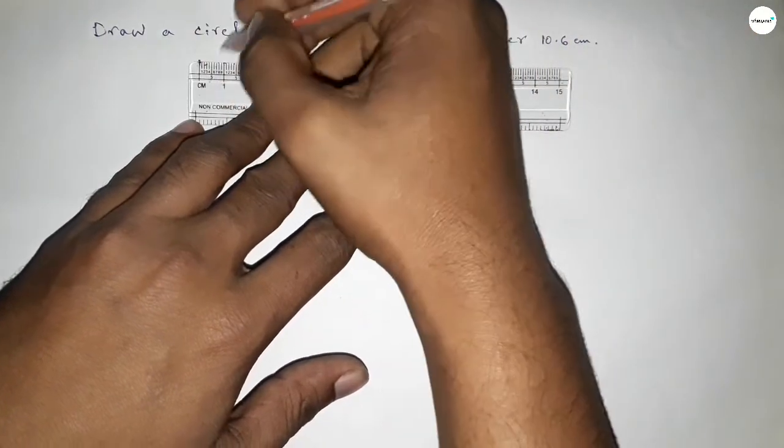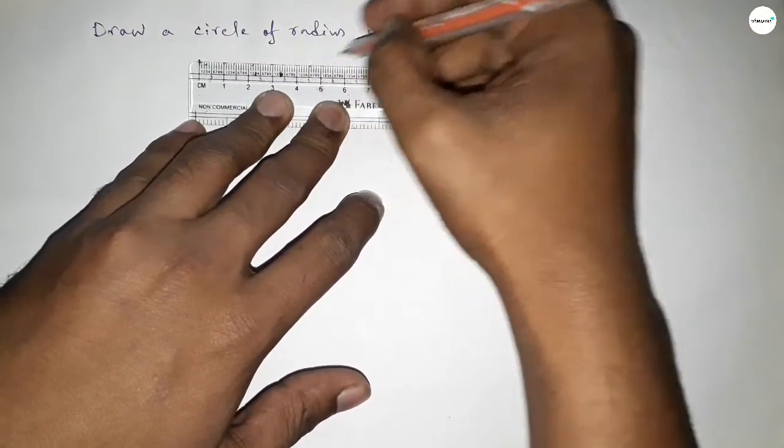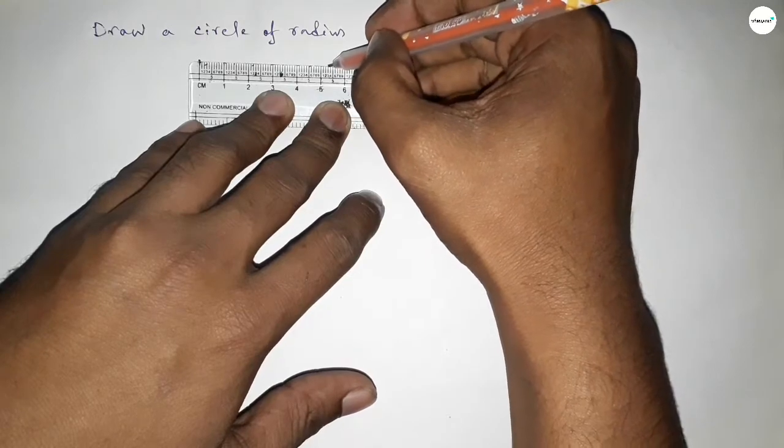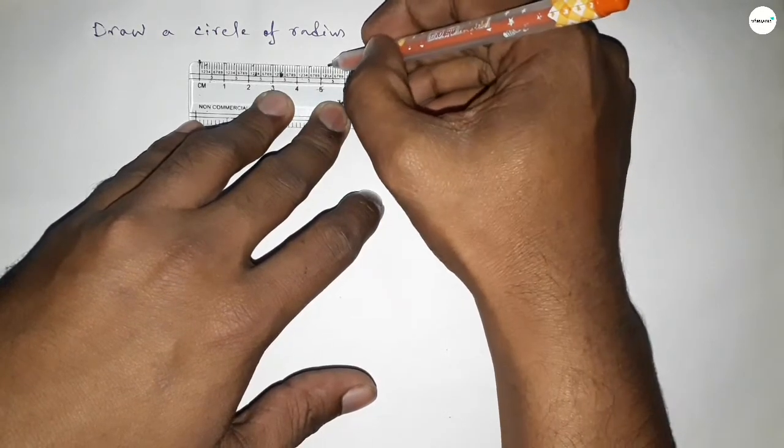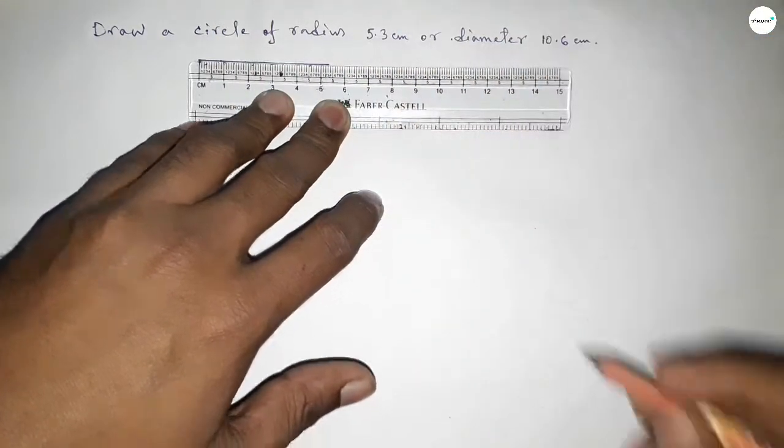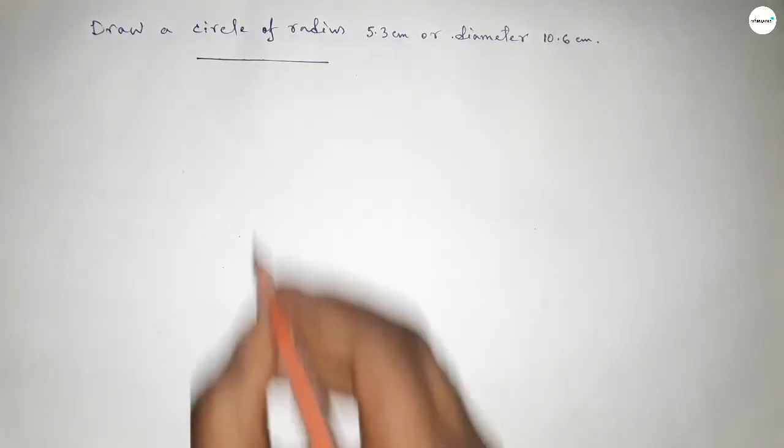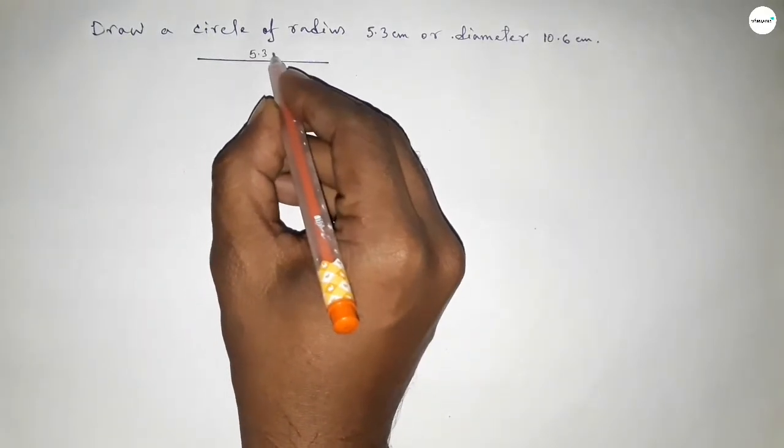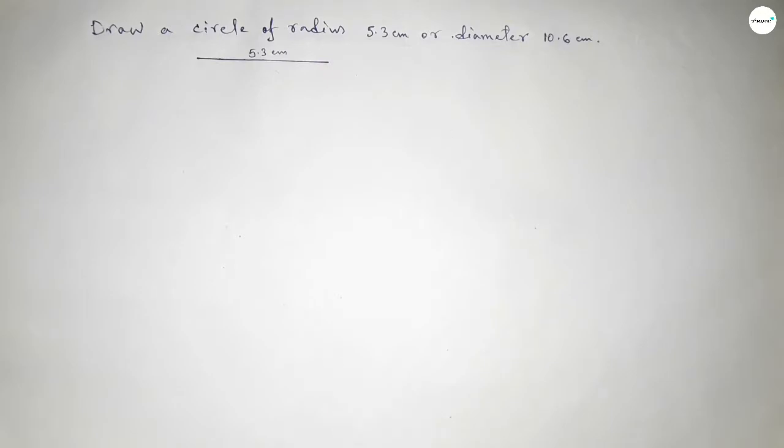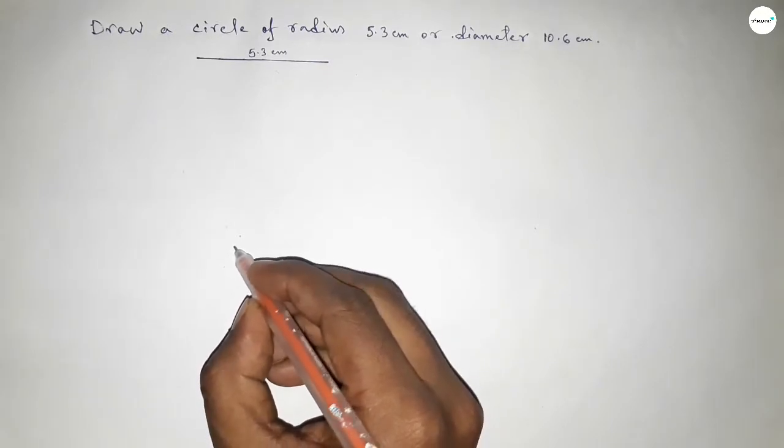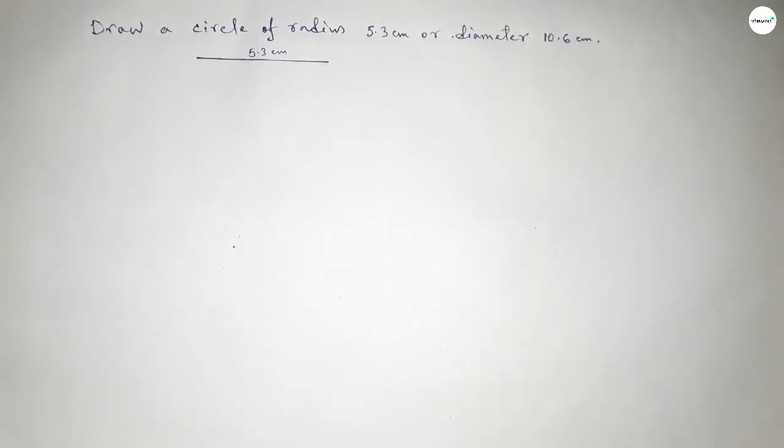This is starting 0, 1, 2, 3, 4, 5, and this is 5.3 centimeter. We know that radius of a circle is half of diameter of the circle. So this is 5.3 centimeter. Now taking here a point.